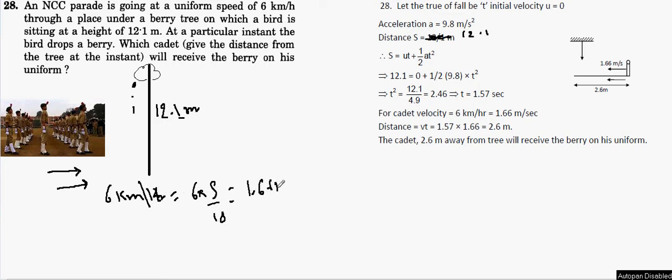The initial velocity of the berry is 0 and the acceleration due to gravity is downward, so it will be 9.8 positive. The distance is the height. We will consider this as ground because they have not mentioned the height of the cadet or at what place it will hit.